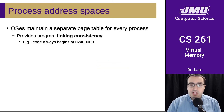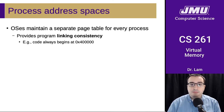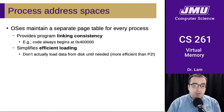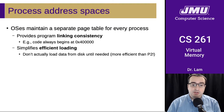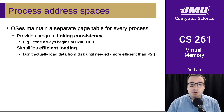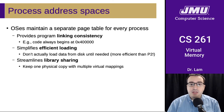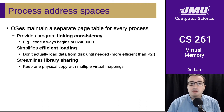The operating system maintains a separate page table for every process. This provides consistency for the program, so it can always count on things being at the same physical addresses — for instance, code generally begins at a particular address. It simplifies loading because you don't actually have to load data from disk until you actually need it, which is even more efficient than loading everything upfront. It also streamlines library sharing because you can have one copy of core system libraries like libc and the math library, so you don't need multiple copies in memory at any given time.